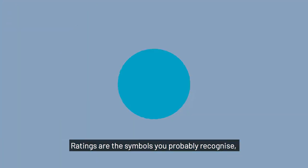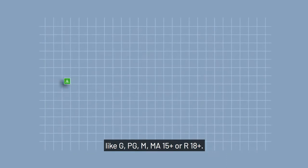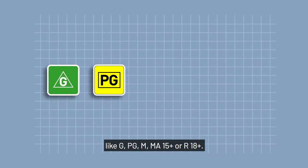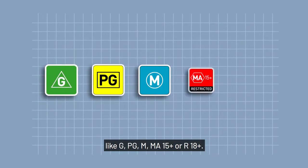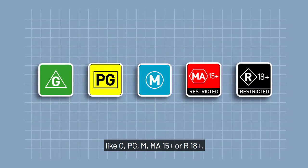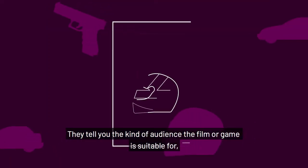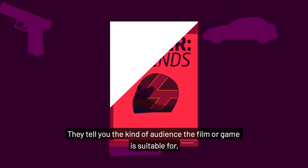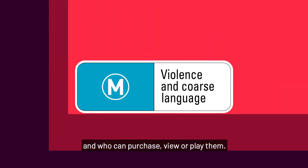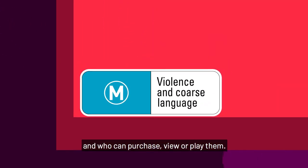Ratings are the symbols you probably recognise, like G, PG, M, MA15+, or R18+. They tell you the kind of audience the film or game is suitable for and who can purchase, view or play them.